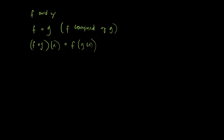So the idea of combining two functions is that it uses the output of one function as the input for the second function. Our first function is g of x, and the output we get from g of x, given a value of x, will be the input for the second function, which is f of x. The domain of f composed of g is the set of all numbers x in the domain of g such that g of x is in the domain of f. Now let's have an example.